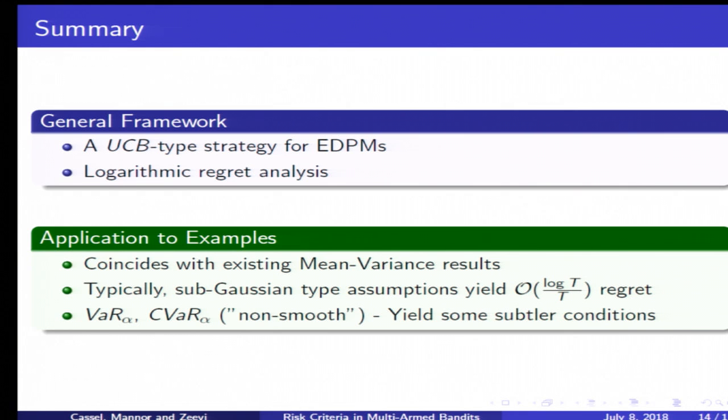For many other risk criteria we show that essentially assuming sub-Gaussian type assumptions on the arm distribution yields an order of log T over T regret with our framework. In some less simple cases like value at risk and conditional value at risk, there is some inherent non-smoothness, and as such we need to require subtler assumptions on the arm distributions for our framework to work.